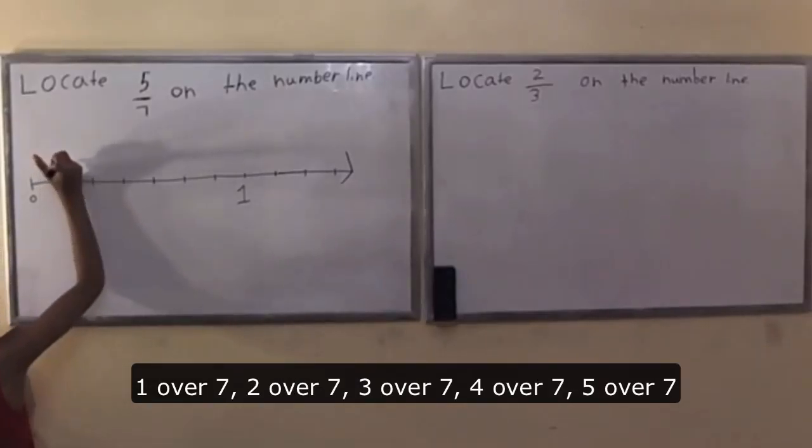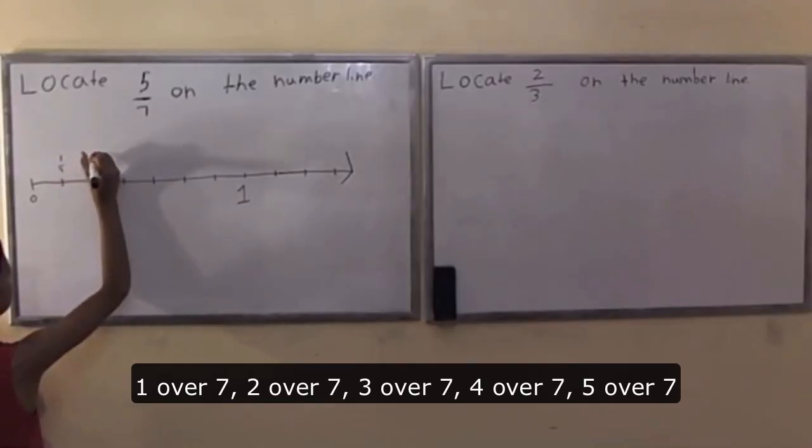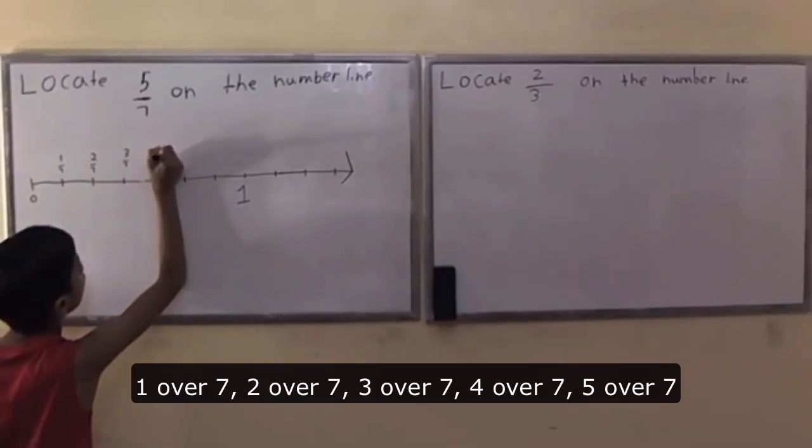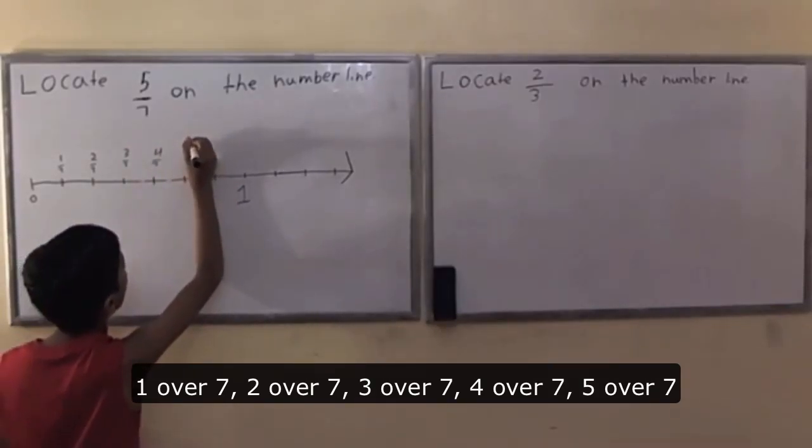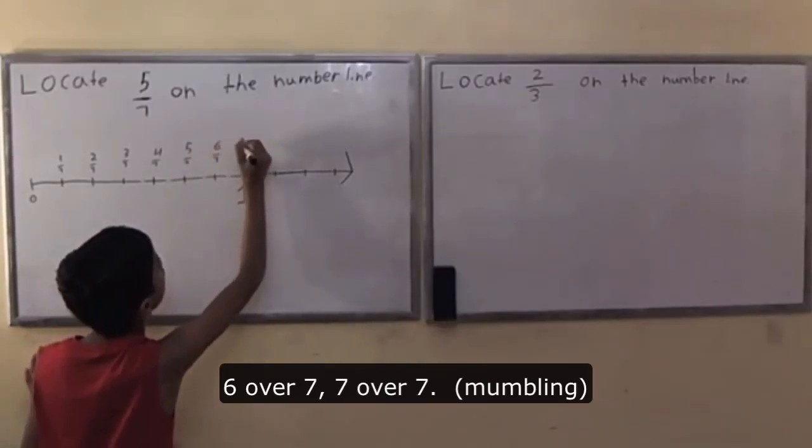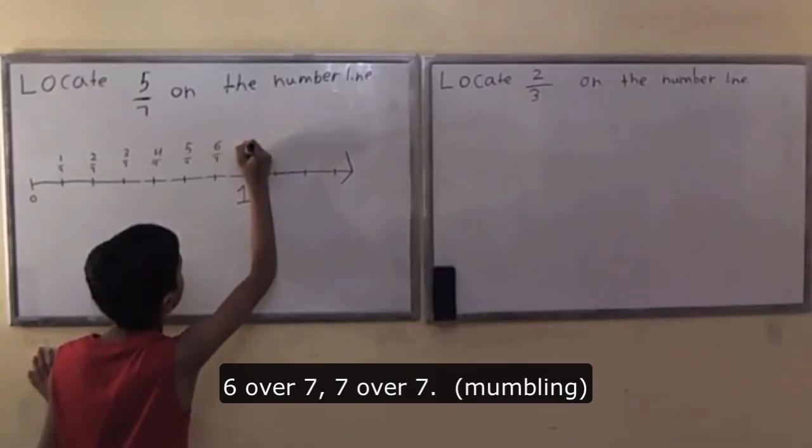So I cut up my unit interval into seven equal pieces. Now watch what I do: 1/7, 2/7, 3/7, 4/7, 5/7, 6/7, and 7/7.